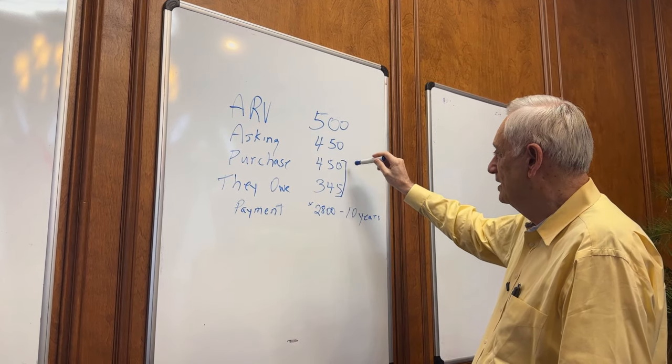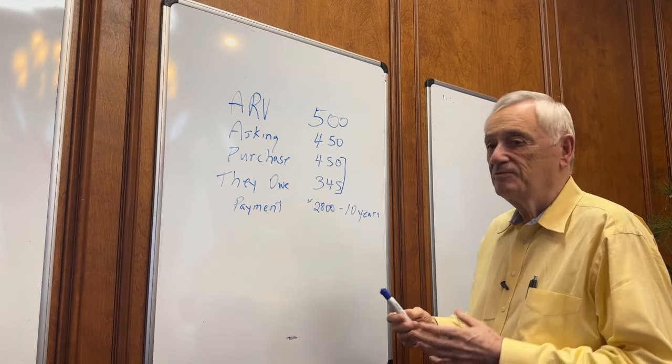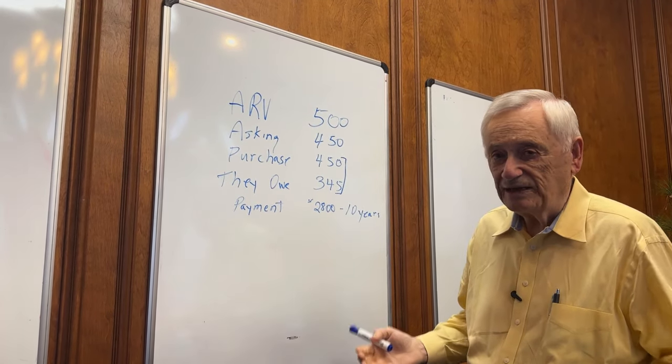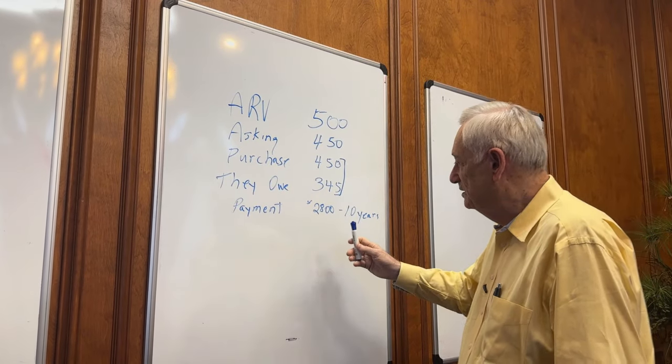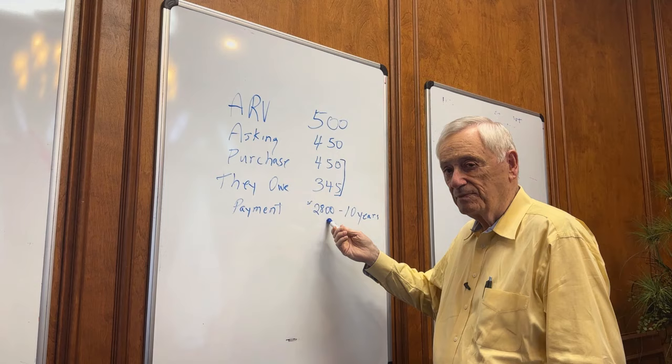The seller asked $450,000, I gave him what he asked. He didn't ask for any money down. He just wants to get that payment off his back, and we've agreed that I'll start making payments in the third month after I buy the property.